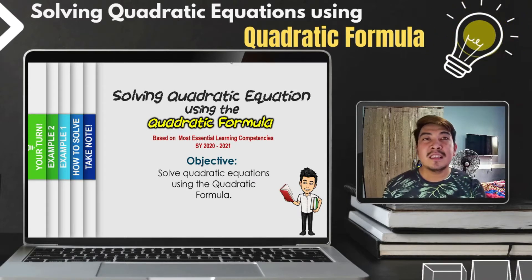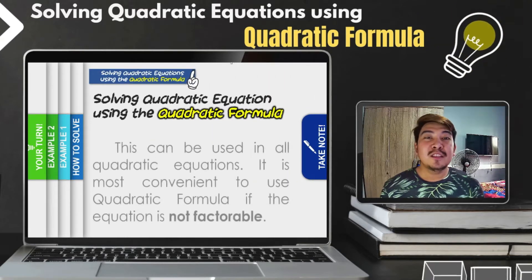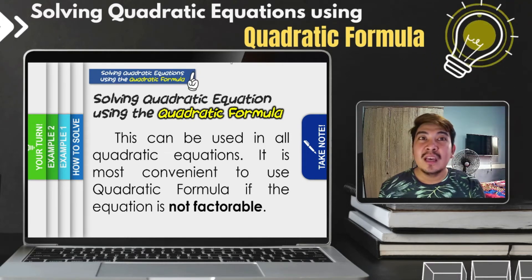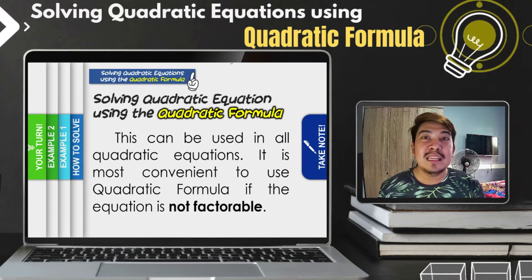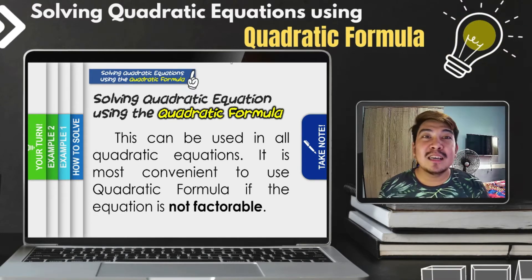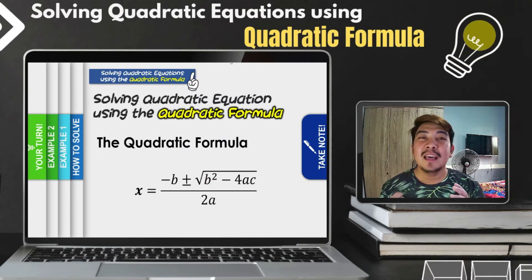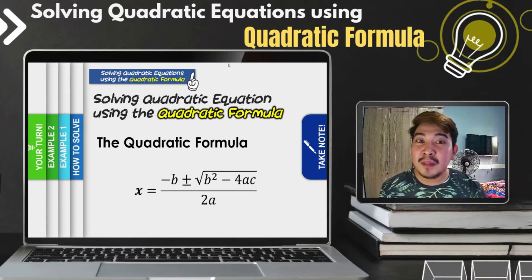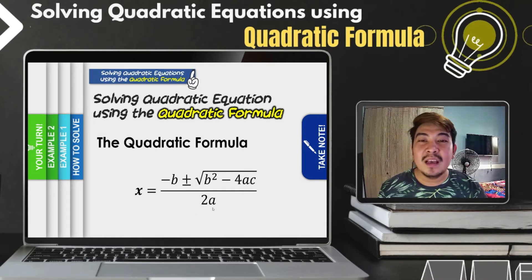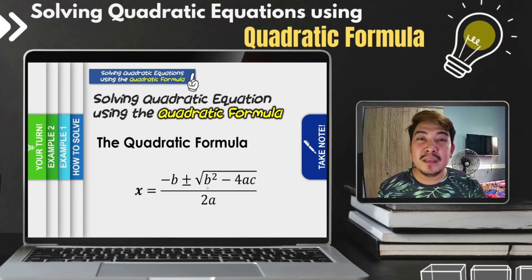The quadratic formula is used in all types of quadratic equations, and it is most convenient to use if the quadratic equation is not factorable. However, whether the equation is factorable or not, the quadratic formula can still be used. The quadratic formula is: x equals negative b plus or minus square root of b squared minus 4ac, all over 2a.